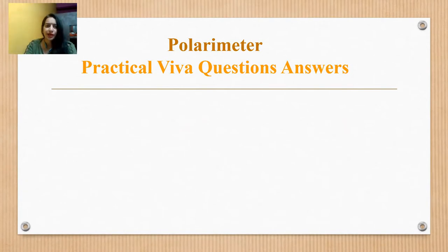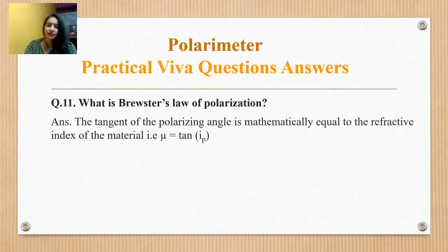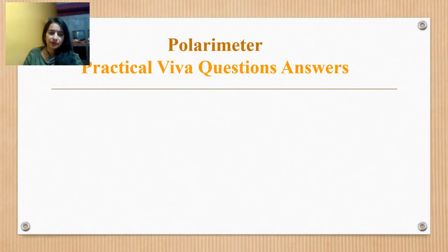What is Brewster's law of polarization? The tangent of the polarizing angle is equal to the refractive index of the material, that is, mu equals tan(ip). This is Brewster's law.